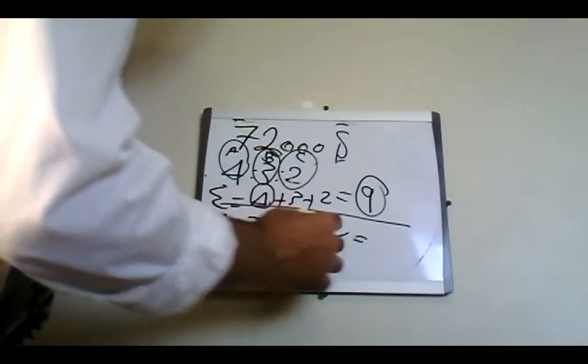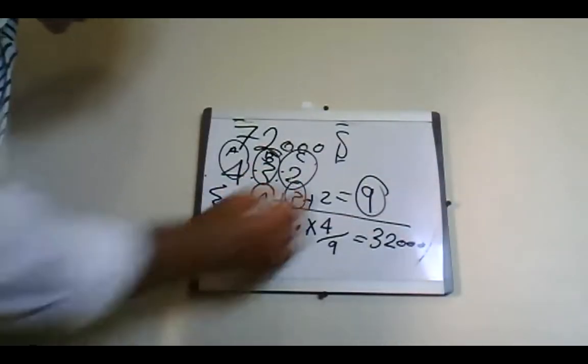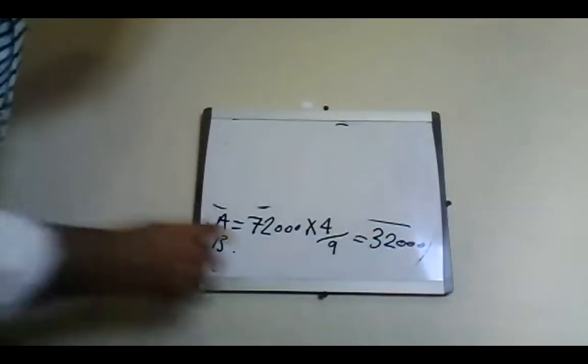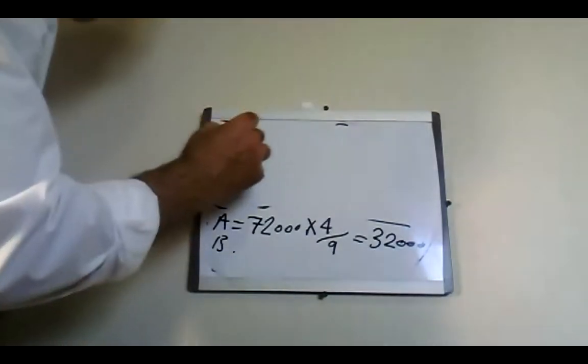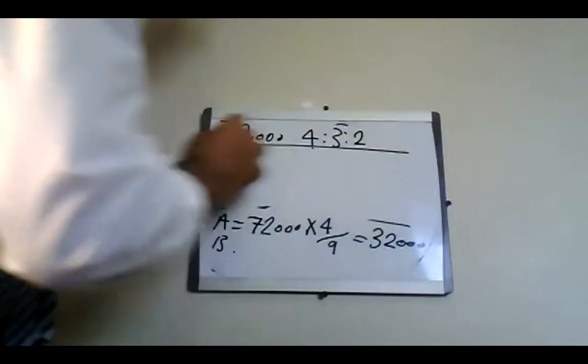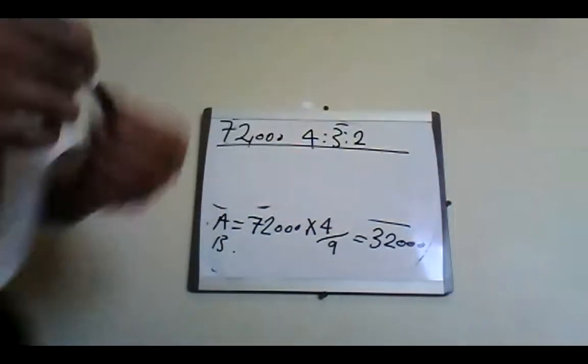A equals 32,000. Now please go ahead for B — the second part — and C — the third part. B will be 72,000 multiplied by 3 over 9, and C will be 72,000 multiplied by 2 over 9. You get your results in two minutes.